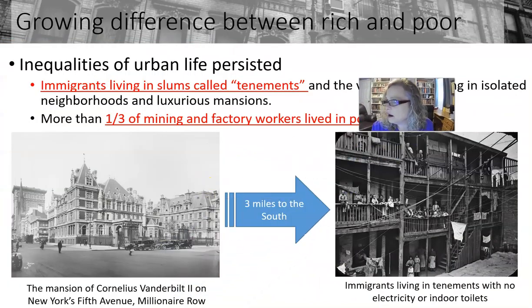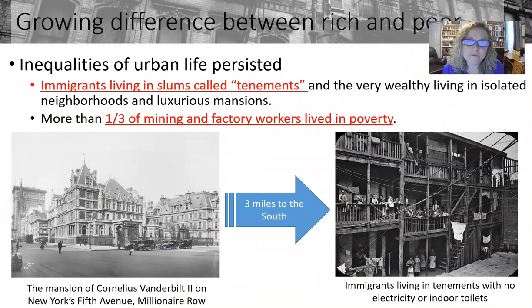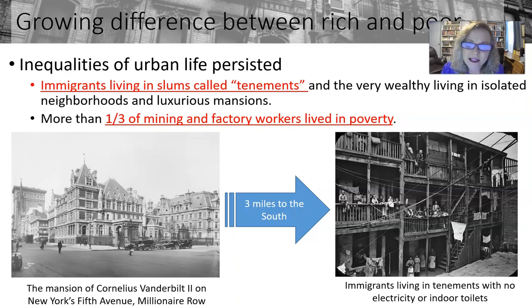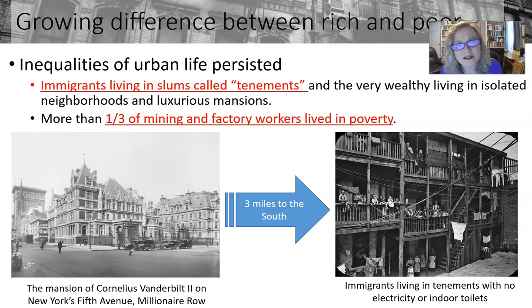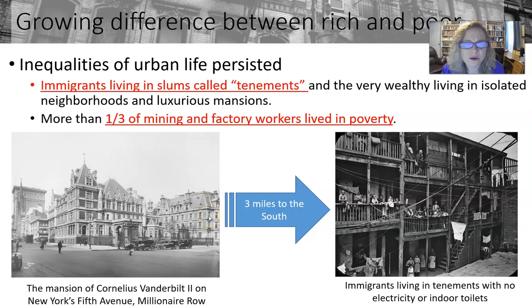One thing we definitely saw was the huge disparity between the rich and the poor. Mark Twain came up with the term 'the Gilded Age' because if you scratch the surface just a little bit, underneath you saw all the inequalities going on — it looked really opulent on the outside, but just needed scratching. For example, Cornelius Vanderbilt lived among other millionaires on Millionaire's Row on Fifth Avenue in New York City, and just three miles south were tenements where people had no indoor plumbing, absolutely disgusting overcrowded conditions with high infant mortality. A lot of people started to speak out about this inequality.